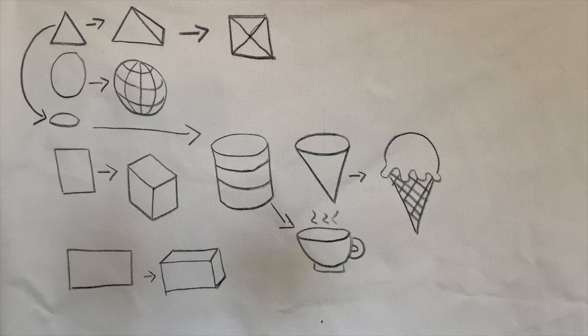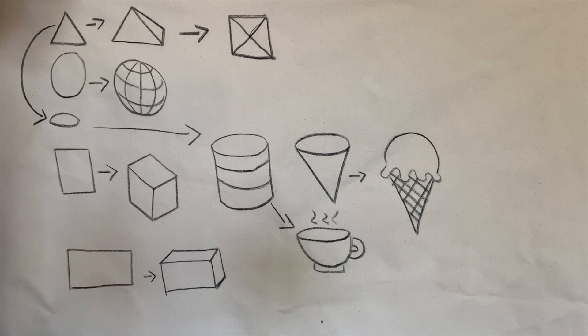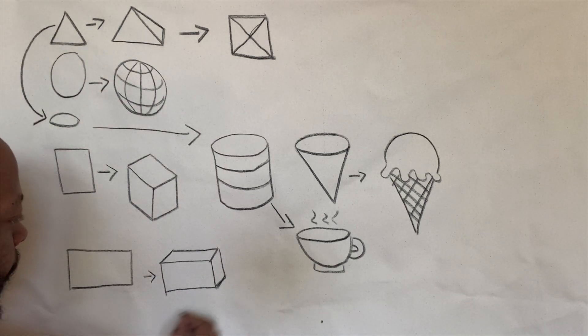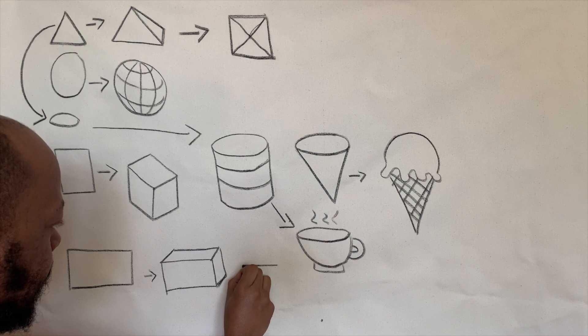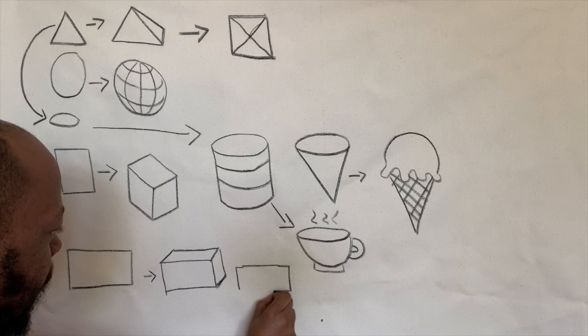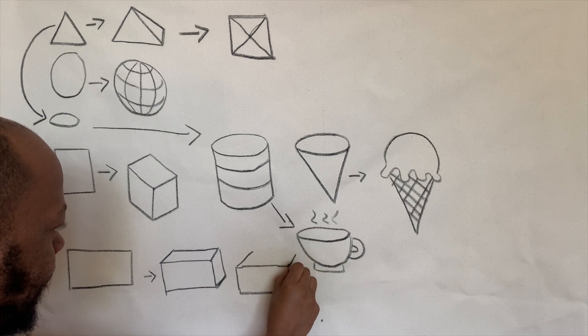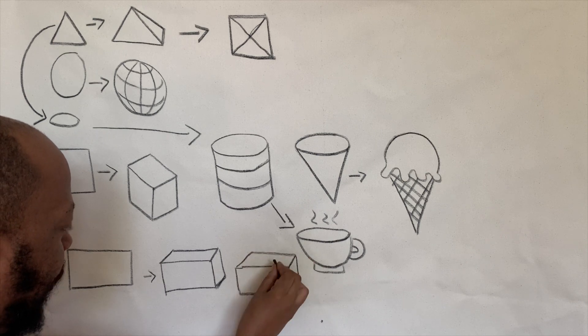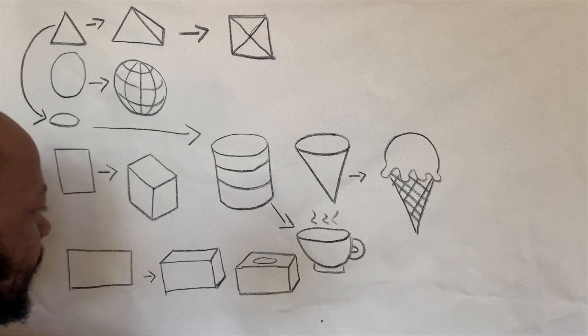So these are the building blocks of everything you see out here. If you want to make your rectangle shape into a tissue box, all you would do, once again, you draw your rectangle. Slanted. Put your oval in the middle. Now you have your tissue box.